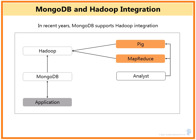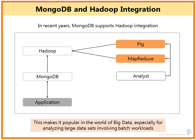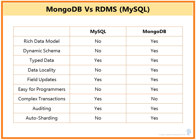In recent years, MongoDB also supports Hadoop integration, making it even more popular in the world of big data, especially for analyzing large data sets involving batch workloads. This slide provides a quick comparison of MongoDB versus a commercially available RDBMS system — in this case MySQL — and it is pretty much self-explanatory.